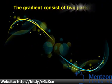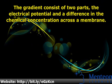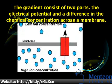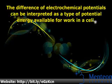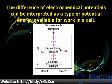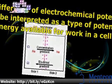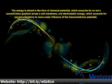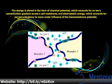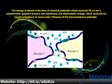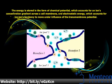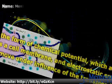The gradient consists of two parts: the electrical potential and a difference in the chemical concentration across a membrane. The difference of electrochemical potentials can be interpreted as a type of potential energy available for work in a cell. The energy is stored in the form of chemical potential, which accounts for an ion's concentration gradient across a cell membrane, and electrostatic energy, which accounts for an ion's tendency to move under influence of the transmembrane potential.